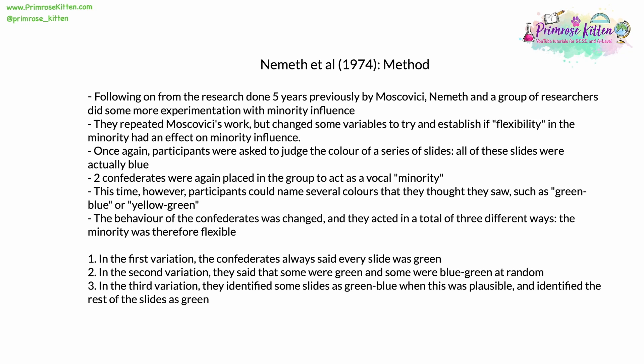The confederates acted in three different ways across Nemeth's variations. In the first, they always said every slide was green, exactly as in Moscovici's study. In the second, they said some were green and some were blue-green, completely at random. In the third and final variation, they identified some slides as green-blue when this was plausible, and identified the rest as green. This minority therefore changed its behaviour and became flexible — it wasn't consistent.